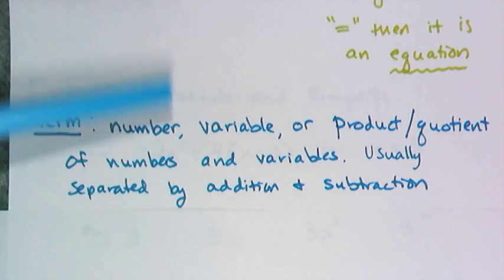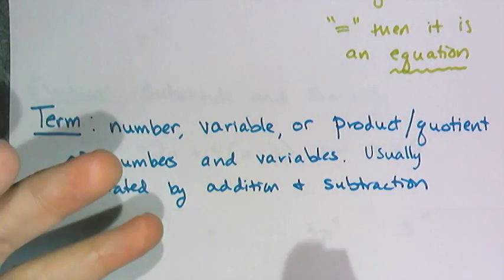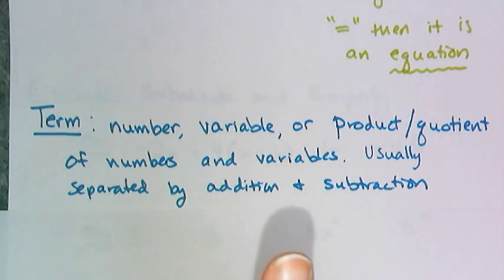Expressions are made up of terms. You have to be able to distinguish the separate terms because when we name things in the future, like polynomials, they're going to be named by their number of terms.